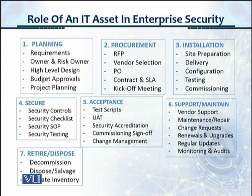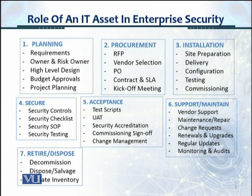Here is another diagram. Let's quickly talk about each step. Step one is planning: for an IT asset, you need to know the requirements. You need to have an owner and a risk owner — a laptop owner is the person assigned the laptop, while the risk owner is the department that consolidates all those assets. You also define a high-level design, explaining why the asset is being acquired and what configuration it will have, along with budget approvals and project planning.